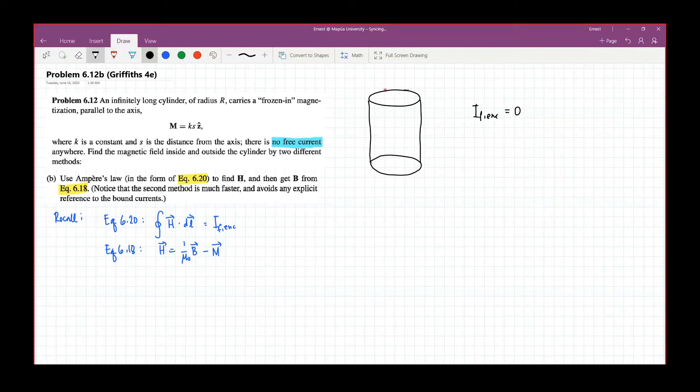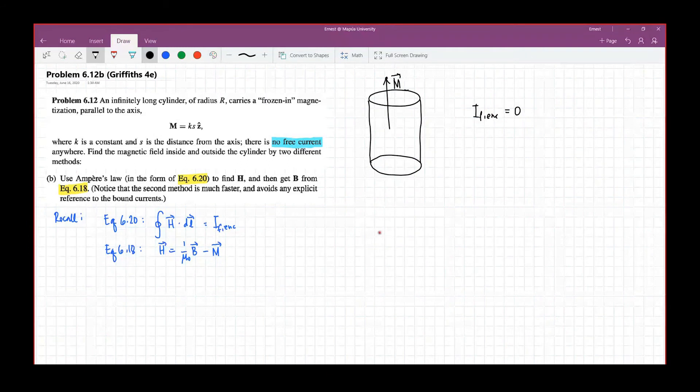If the magnetization points along the z-direction, naturally the auxiliary field and the subsequent magnetic field will also point either in the same direction as M or opposite direction of M.